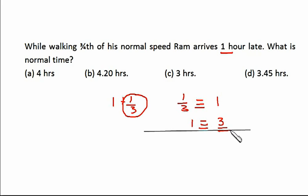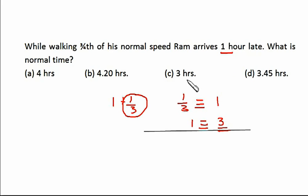In this case he is getting late by one hour, and this one hour is equivalent to one-third. So if one-third equals one hour, then one equals three hours. That 'one' was the normal time to cover that distance. So he regularly takes three hours. On that particular day, walking at three-fourths speed, he took one hour more — that is four hours to complete that distance.